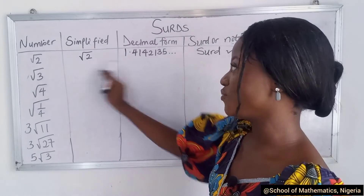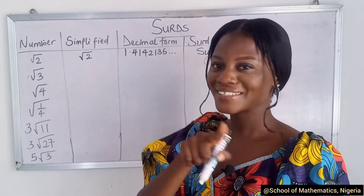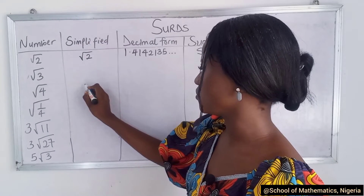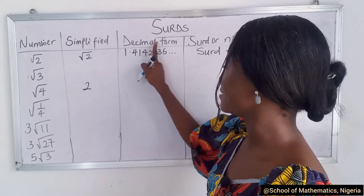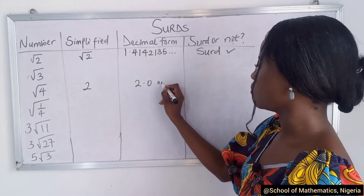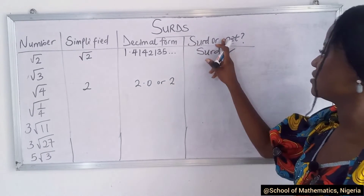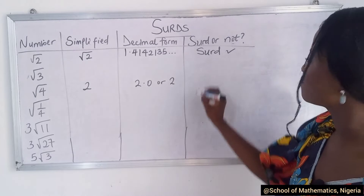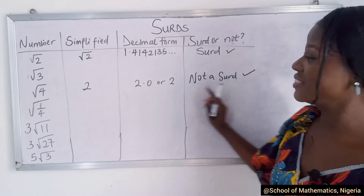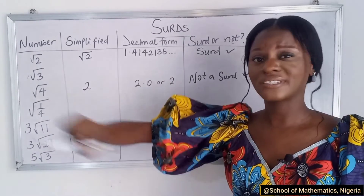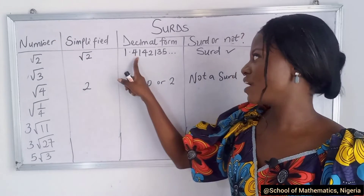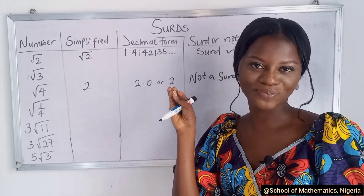I'll leave the second one for you — tell me the answer in the comment section. Now let's do the third one: √4. In its simplified form, without using your calculator, you know it's 2. In decimal form it's 2.00, or just 2. So is this a surd or not? Not a surd! Why? Because it has an exact answer. It's not continuous, it has an end. It's exact — we don't have it continuously going to where we don't know.